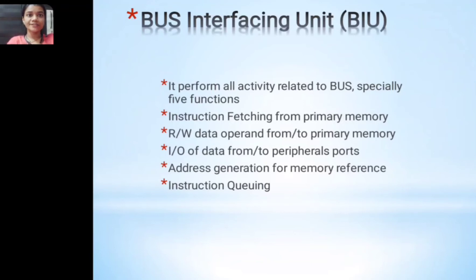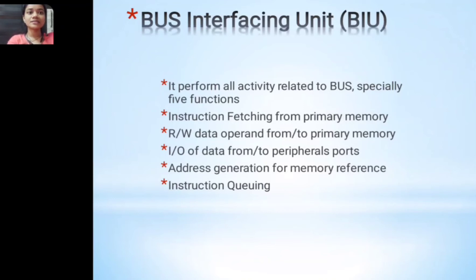The next part of the 8086 architecture is the Bus Interface Unit (BIU), which performs all activities related to the bus and has five main functions: instruction fetching from primary memory, read/write of data operands from or to primary memory, input/output of data from or to peripheral ports, and address generation for memory reference.